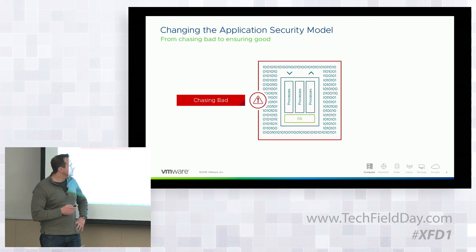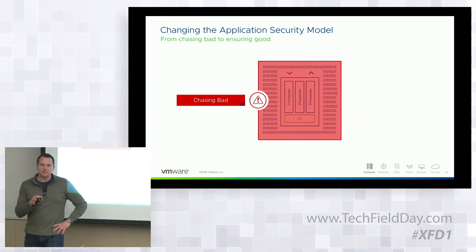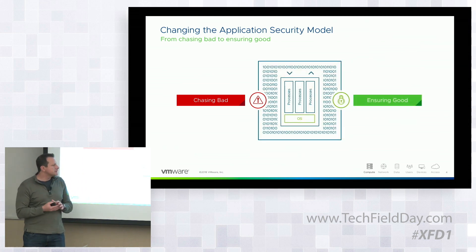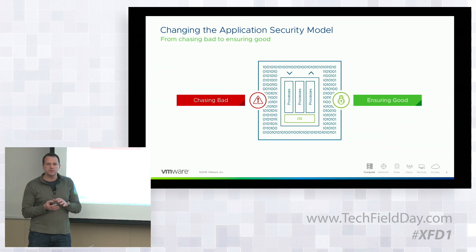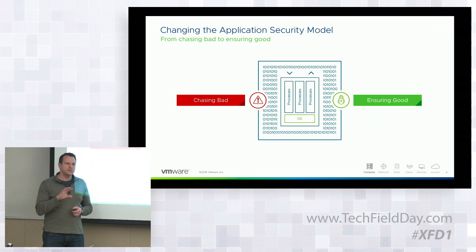All of this is based off this notion of validating known good behavior versus chasing bad behavior, and this is an important piece of the puzzle. The reason why this is important is it leverages what VMware's greatest strength is — we can continuously provide intelligence about what is normal expected state behavior for a virtual machine and for a particular application type.